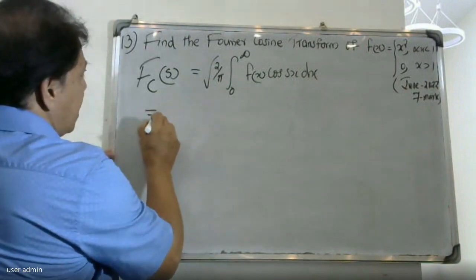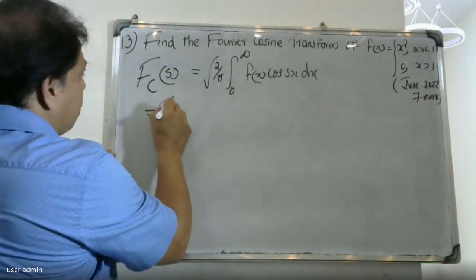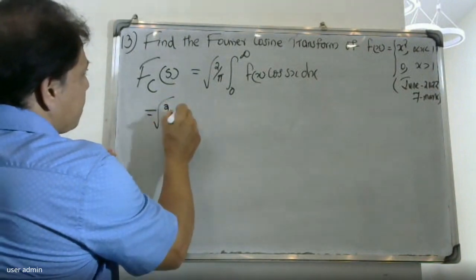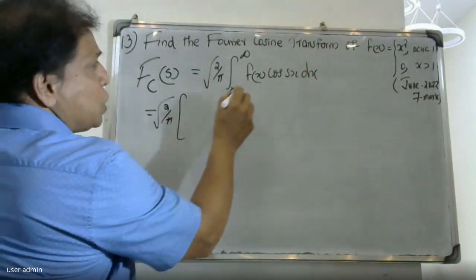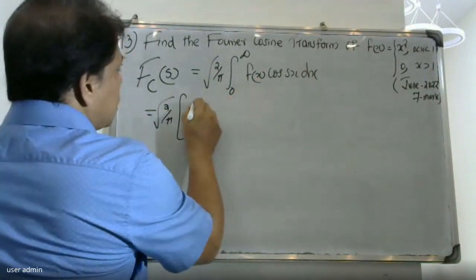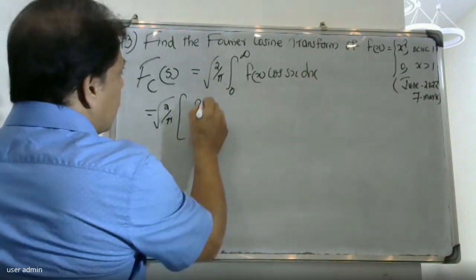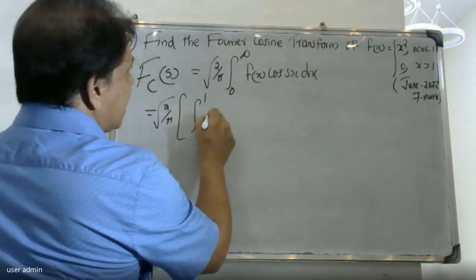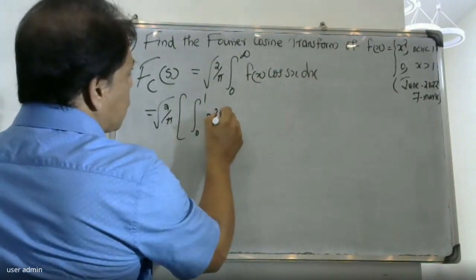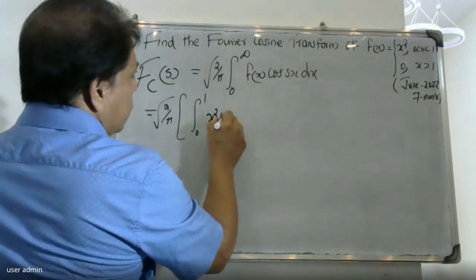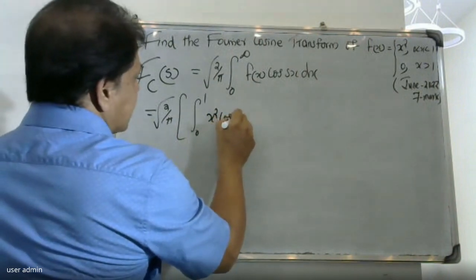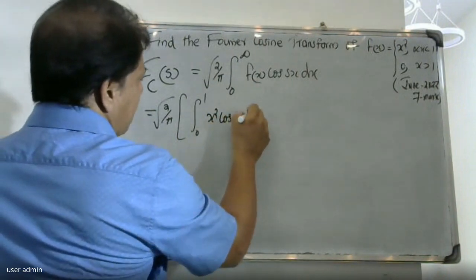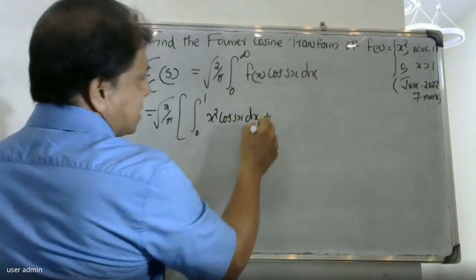We write: root of 2 by pi, integral from 0 to infinity of f(x) cos(sx) dx. Since f(x) is defined piecewise, we split the integral — from 0 to 1 the function is x², and beyond 1 the function value is zero.